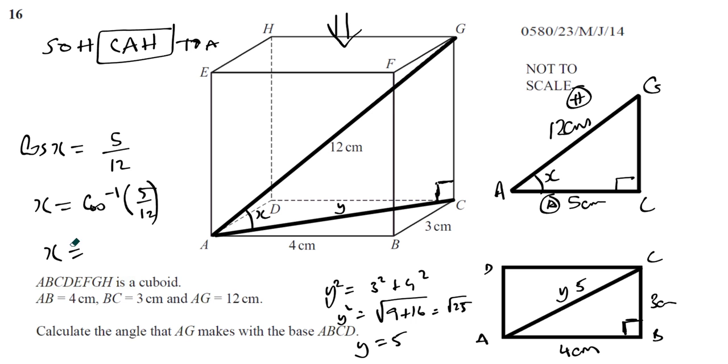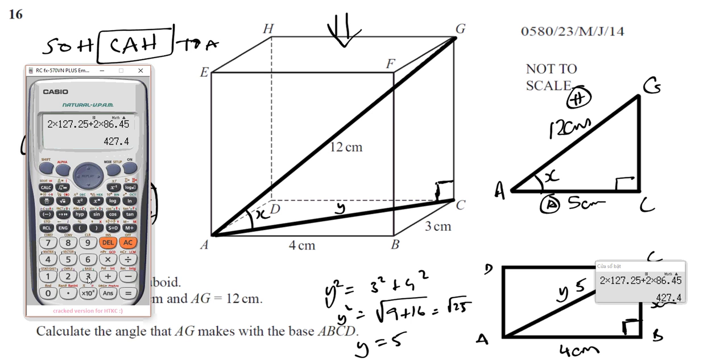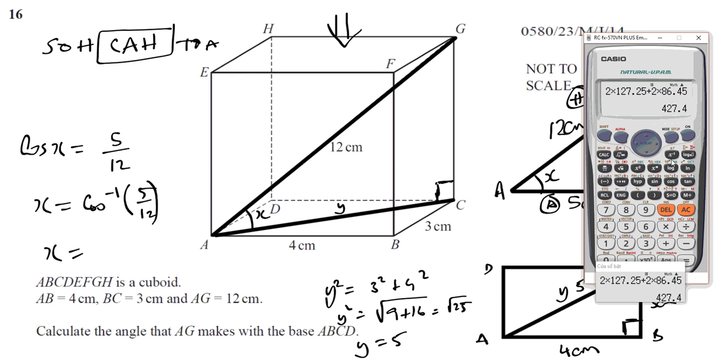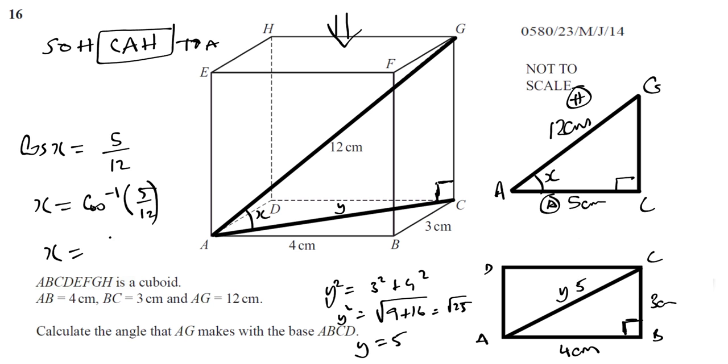So X will be, take out our calculator. We have shift cosine, inverse cosine, five over twelve - five divided by twelve. Now we must make sure that the calculator is in degree mode and it is, and press equal, gives us angle 65.375.